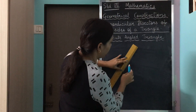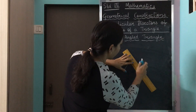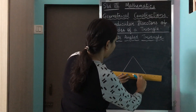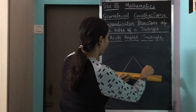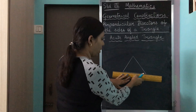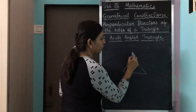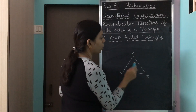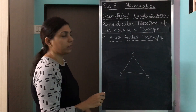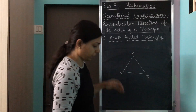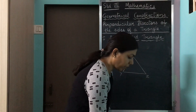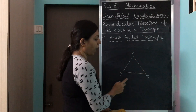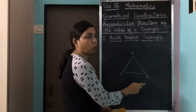I am drawing a triangle over here. I will give it a name — let's call it triangle X, Y, Z. All the angles are less than 90 degrees, so it is called the acute angle triangle. Now we will draw perpendicular bisectors to each of these sides. I will start with the base, which is side YZ.